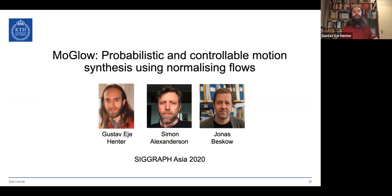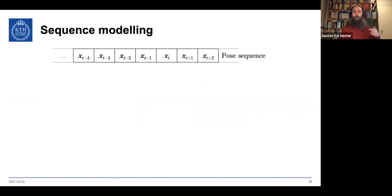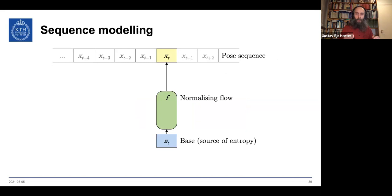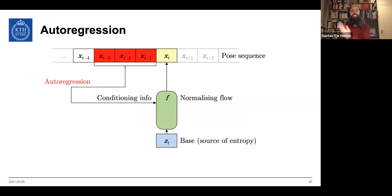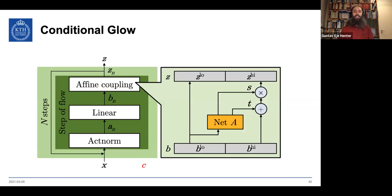This brings us to MoGlow, a preprint from 2019 that appeared at SIGGRAPH Asia. We want to generate a sequence of poses — motion — using a normalizing flow. Motion needs to be continuous, so we look at previous poses and use autoregression to ensure the next pose's distribution is consistent. We feed conditioning information c into the affine coupling layer as input to the network, making the transformation highly non-linear and dependent on both inputs.